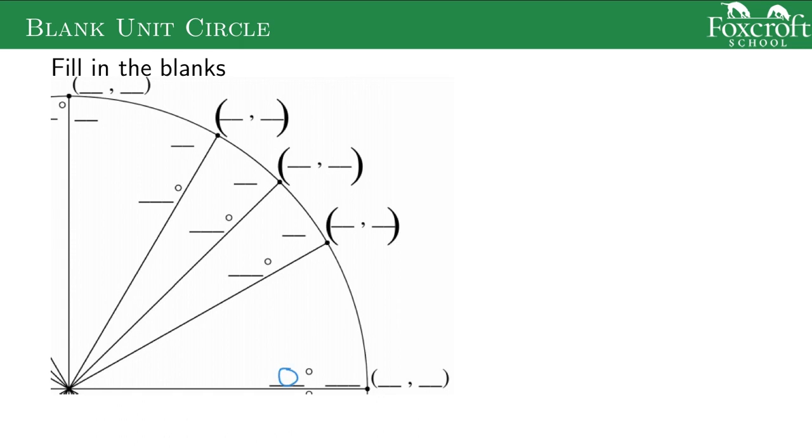This is the 0 degree angle. We haven't moved at all. The next one is the 30 degree angle. Then it's the 45 degree angle, the next one we talked about. We didn't talk about this one, but we'll see that it's actually related to one. This is 60 degrees. And up here is 90 degrees. Don't worry about these other blanks. We'll talk about those later.